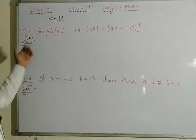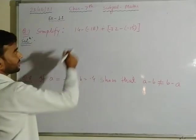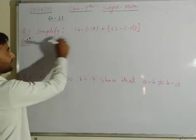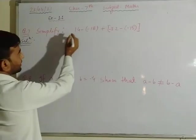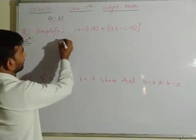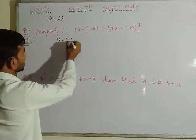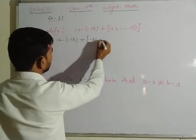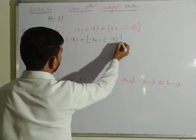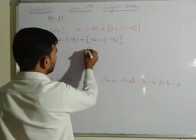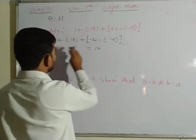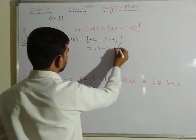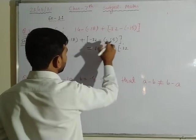Let's start question number 7: simplify 14 minus minus 18 plus minus 32 minus minus 15. For simplification, first we write this question: 14 minus minus 18 plus minus 32 minus minus 15. Applying sign rules: minus minus gives plus, so we get minus 14 plus 18 plus minus 32 plus 15.